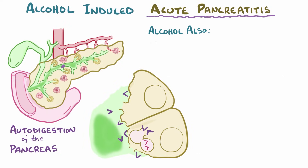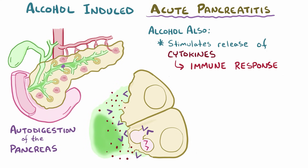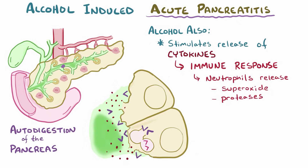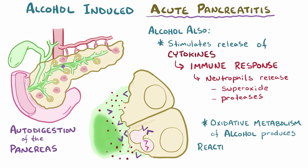Alcohol also contributes to pancreatitis in other ways — for example, stimulating acinar cells to release inflammatory cytokines, which attracts a strong immune reaction. Neutrophils arrive quickly to the scene and often release superoxide and other proteases, which contribute to the problem. Finally, it's thought that high consumption and subsequent oxidative metabolism of alcohol might produce enough reactive oxygen species to overwhelm cellular defenses and damage the cells.